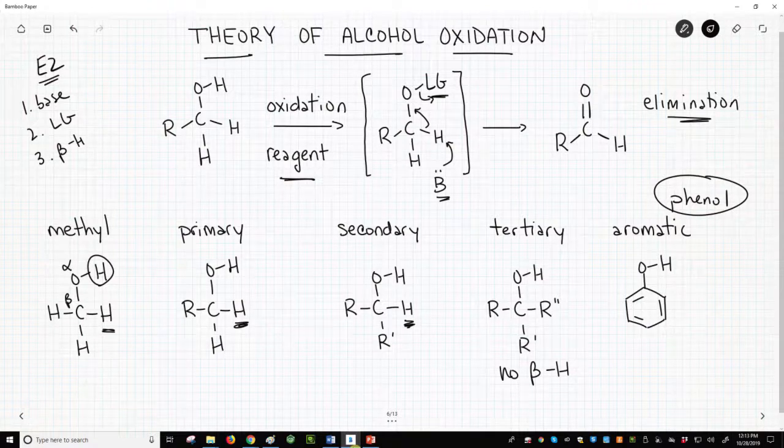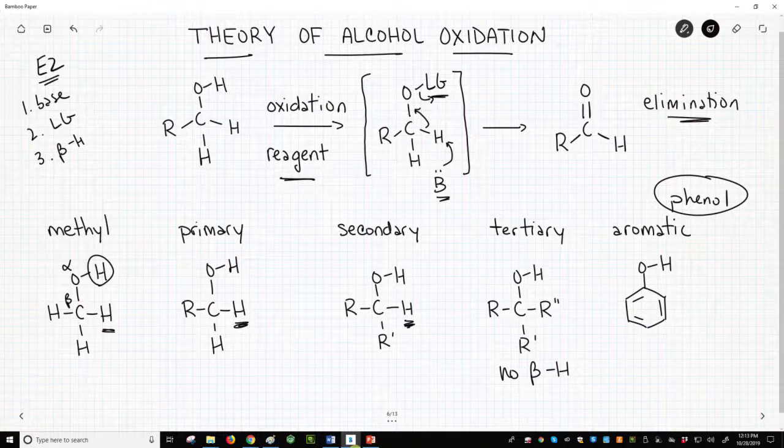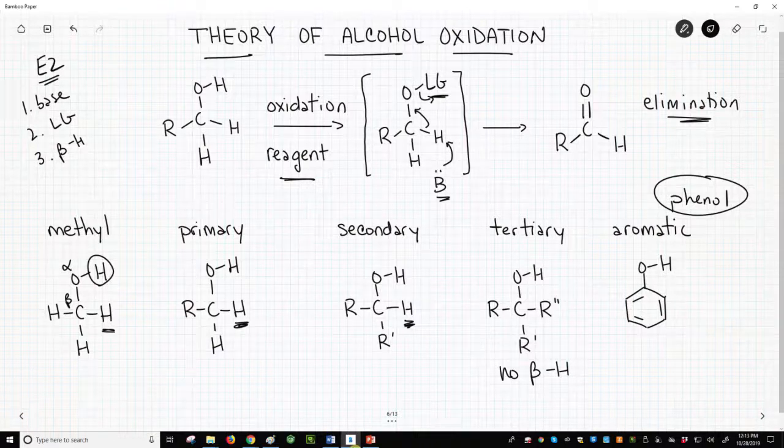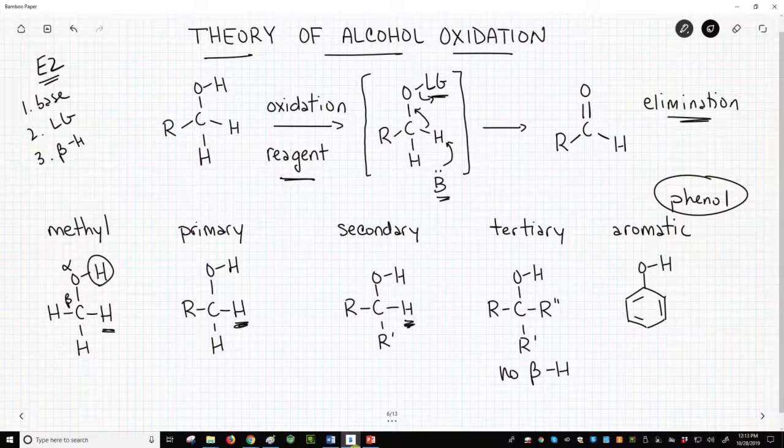In fact, we cannot use our normal oxidation reagents to oxidize a tertiary alcohol. The same goes for phenols. So in performing alcohol oxidations, we will essentially be limited to primary and secondary alcohols. Methanol just isn't that interesting. Only primary and secondary alcohols have the required beta hydrogen for the elimination that occurs during the oxidation.